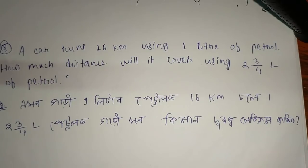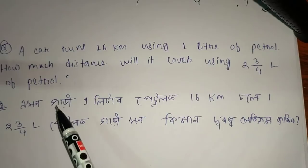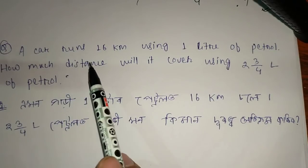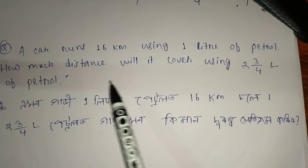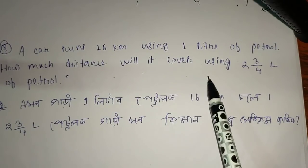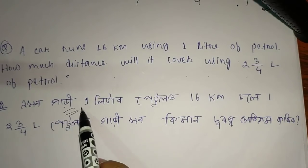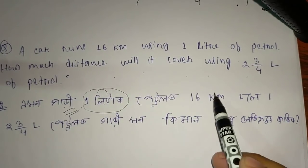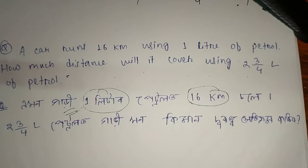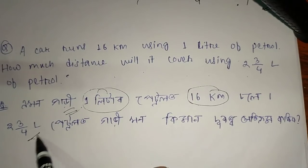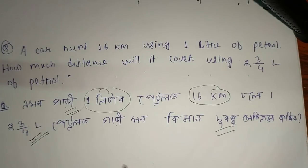Next question: A car runs 16 km using 1 litre of petrol. How much distance will it cover using 2 and 3/4 litres of petrol? This is an NCERT question. The car covers 16 km per litre, and with 2 and 3/4 litres of petrol we need to find the total distance.